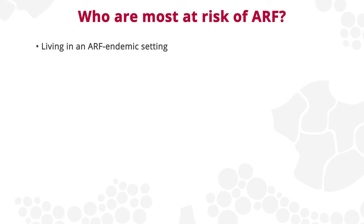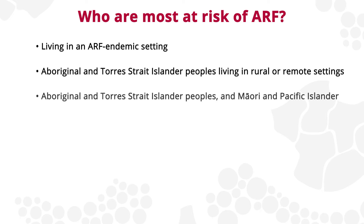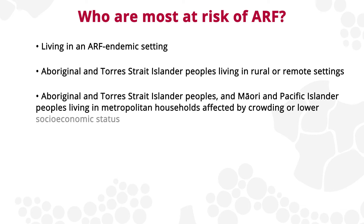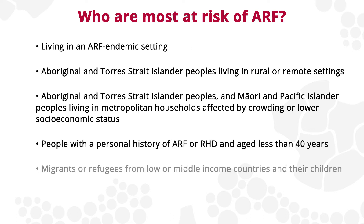Who is most at risk of ARF? Those at highest risk include anyone living in a community with known high rates of ARF; Aboriginal and Torres Strait Islander peoples living in rural or remote settings; Aboriginal and Torres Strait Islander peoples, and Māori and Pacific Islander peoples living in metropolitan households affected by crowding or lower socioeconomic status; people with a personal history of ARF or RHD aged less than 40 years. Other higher-risk groups include migrants or refugees from low or middle-income countries and their children.